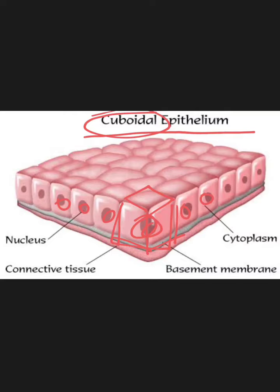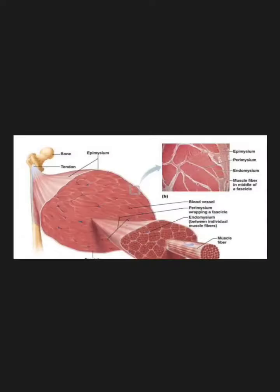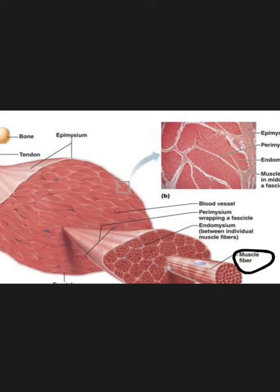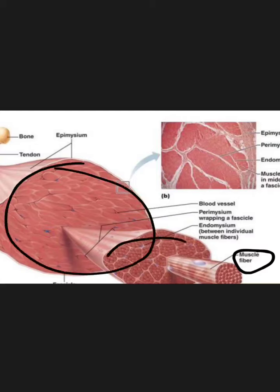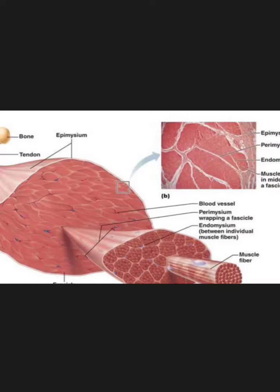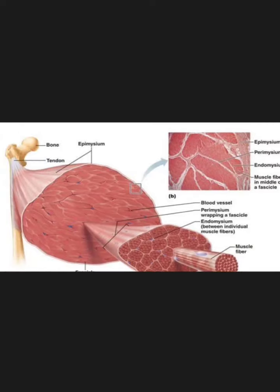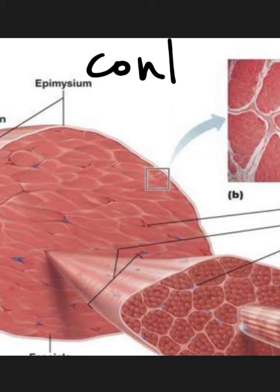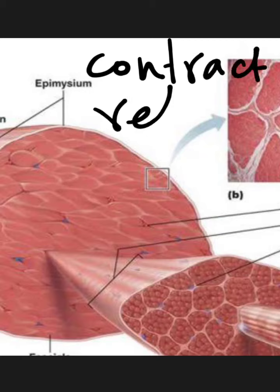Now let's move on to the next category: muscular tissues. Muscular tissues are present in every part of the body and are involved in all kinds of movement of the body and its parts. Muscular tissues bring about movement by their ability to contract and relax — that is the main characteristic feature of muscles.